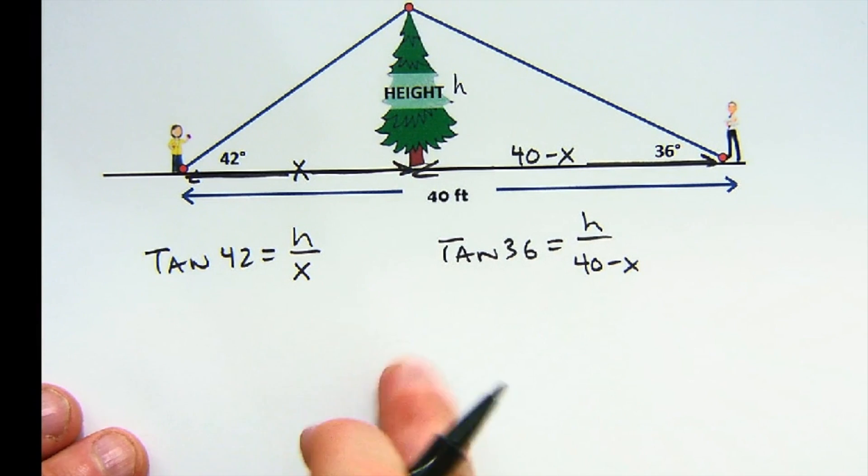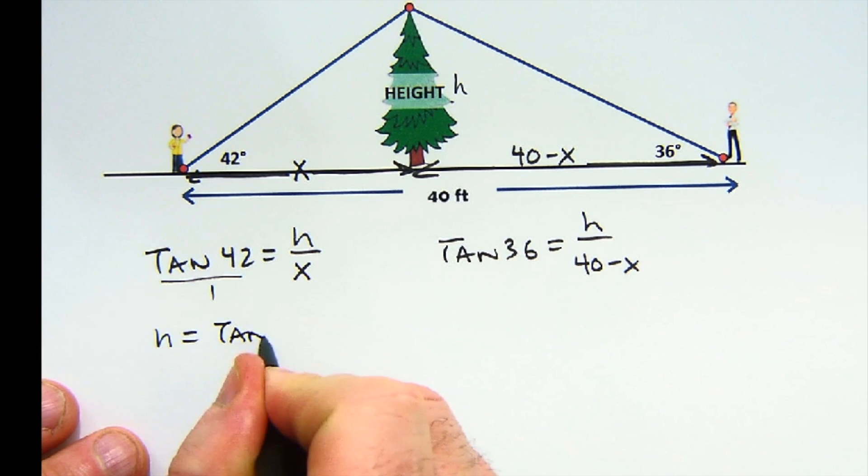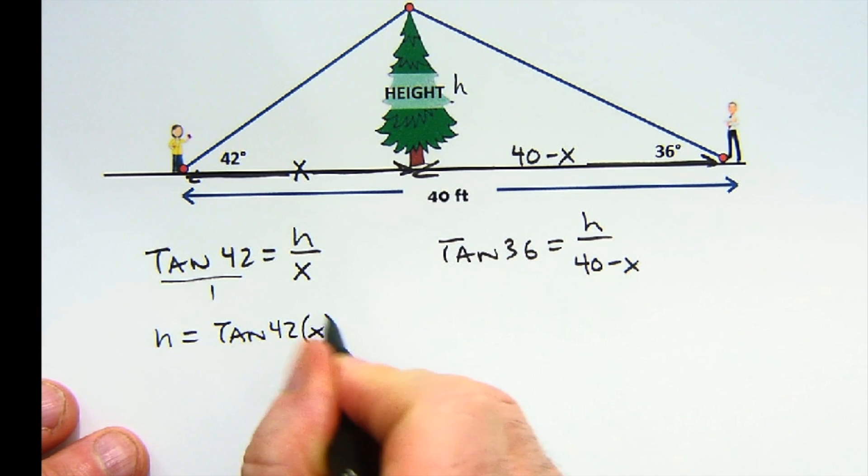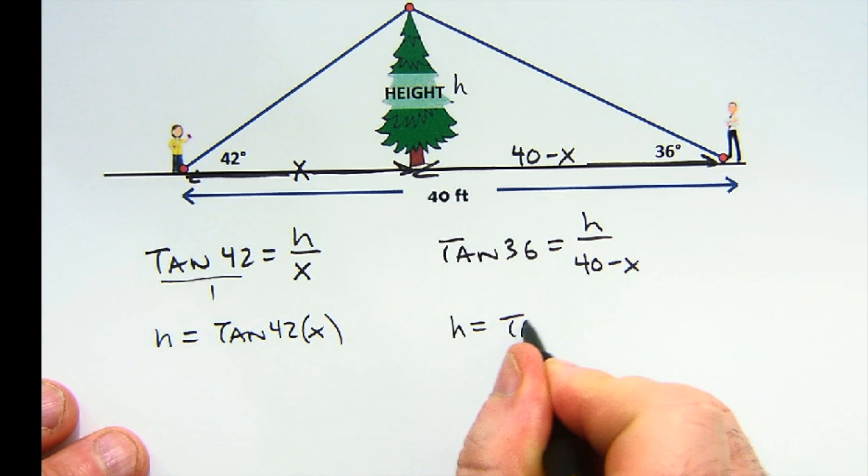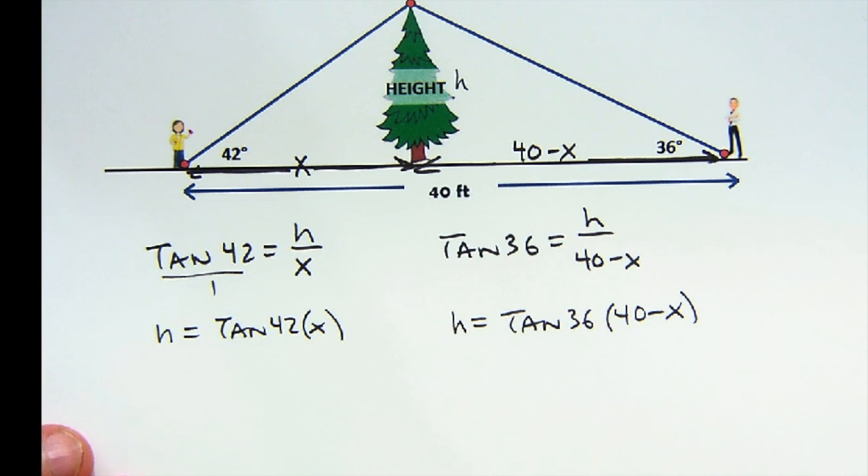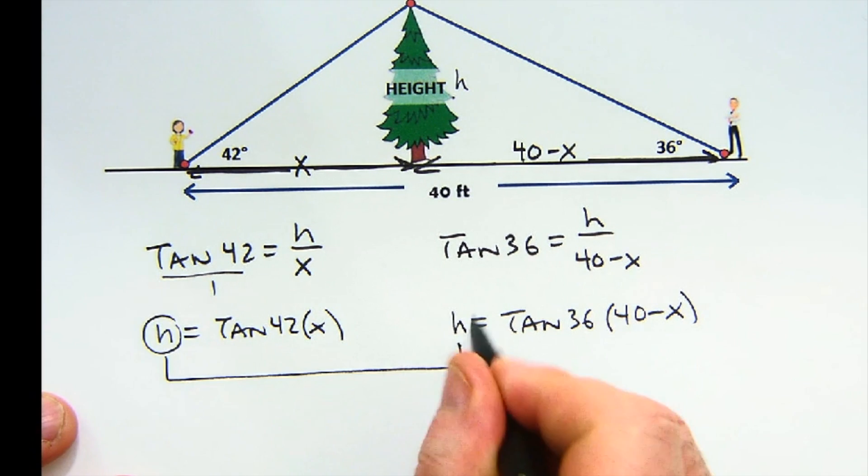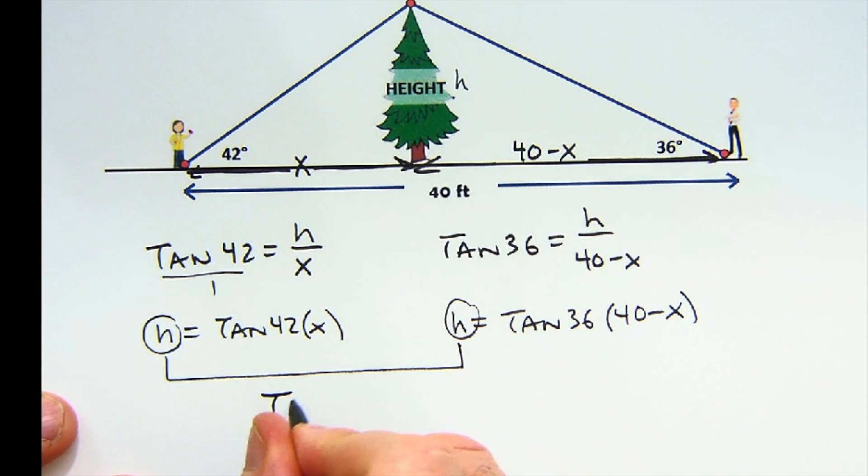Now I'm going to cross multiply both of these, and I get h equals the tangent of 42 times x, and I get h equals the tangent of 36 times 40 minus x. Seems that things seem to be too complex here, too many variables.